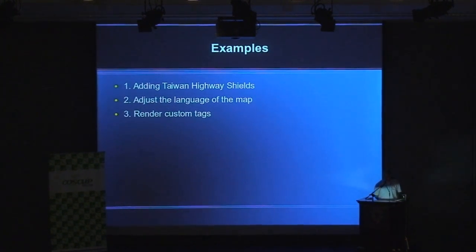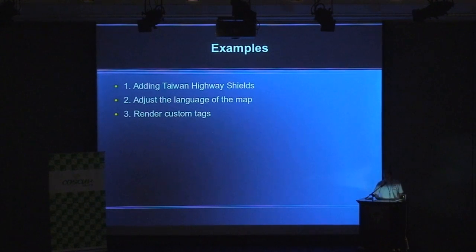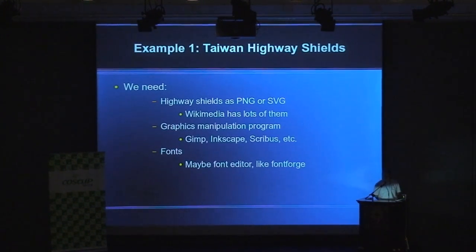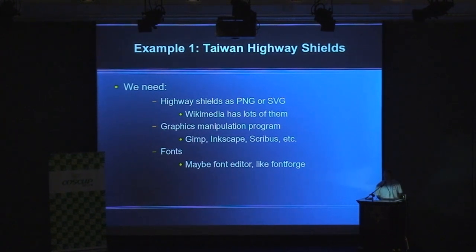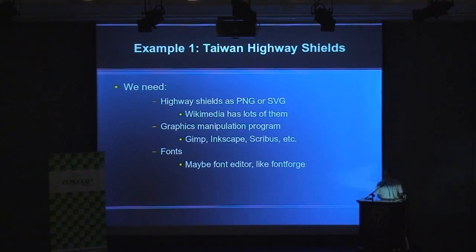Now I have three examples. The first is adding Taiwan Highway Shields. The second is adjusting the language of the map to display names in a different language. The third is rendering custom tags. For the Taiwan Highway Shields demonstration, we need highway shield images in PNG or SVG format. Wikimedia has many available that we can download and resize. We may need a graphics program like GIMP, Inkscape, or Scribus to work with these and create templates.